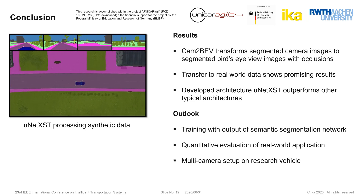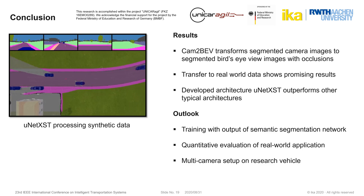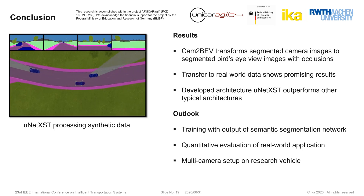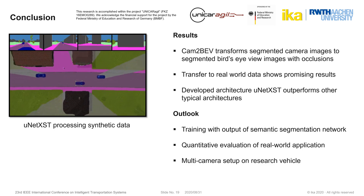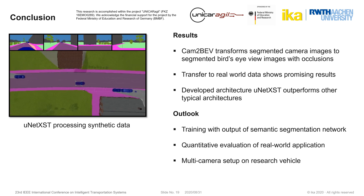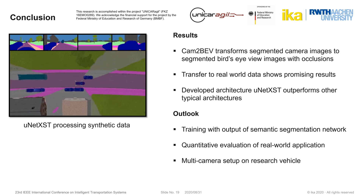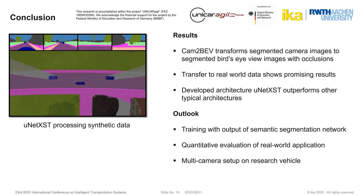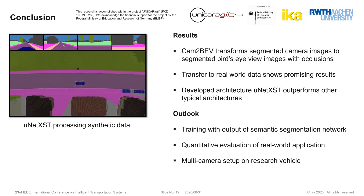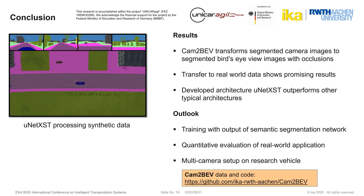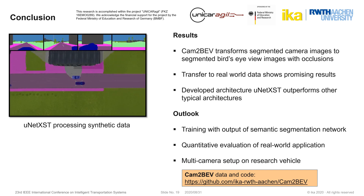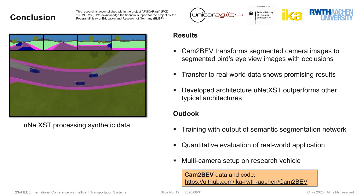In the future, we would like to replace the ground truth data from the simulation with more realistic output from a neural network trained on synthetic data. We will also need to create labels for our real-world data to quantify the performance of our approach in a real-world setting. To try the four-camera setup in the real world, it will be necessary to equip a vehicle with four cameras and have models available that can segment their images. There are many open research questions, and we would be happy if you contribute to our project on GitHub. Thanks for listening.